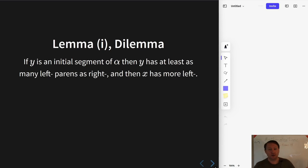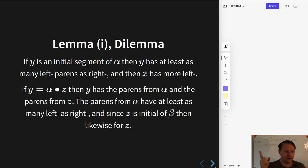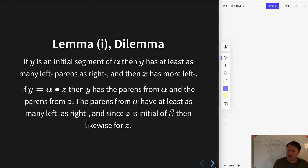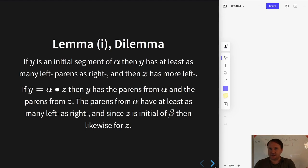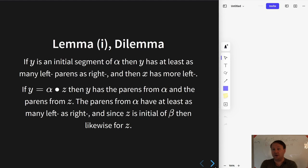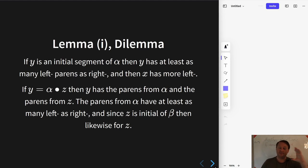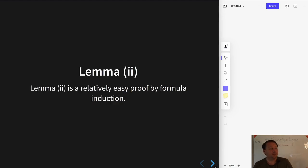For the first case, using the fact that any initial segment of a formula has at least as many left parentheses as right, Y has at least as many left as right, and since X has one additional left parenthesis, X has strictly more left than right parentheses. For the second case, Y equals alpha-bullet-Z: alpha being an initial segment of a formula has at least as many left as right, and Z being an initial segment of beta likewise, so Y again has at least as many left as right, and X has strictly more. Lemma two is a straightforward formula induction proof, so I'm skipping that.